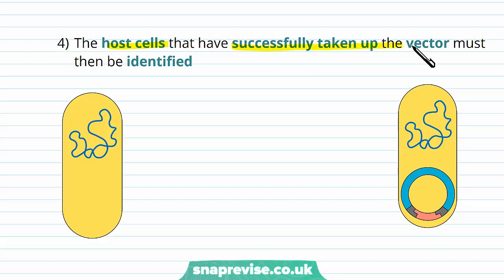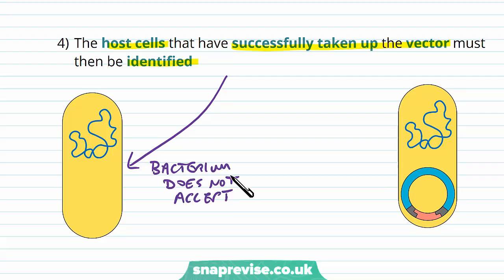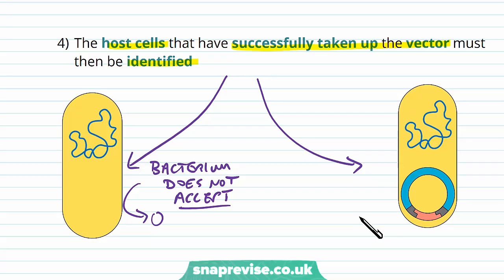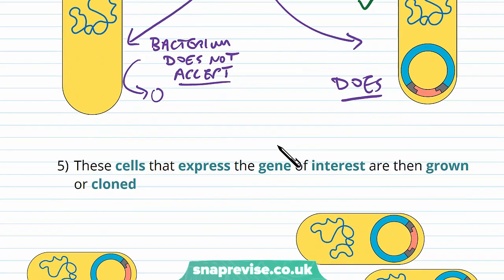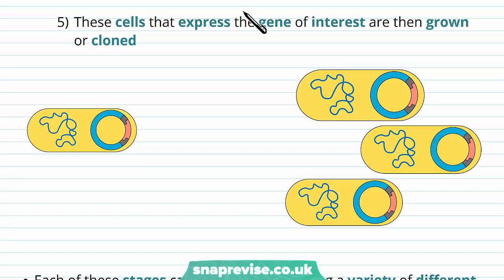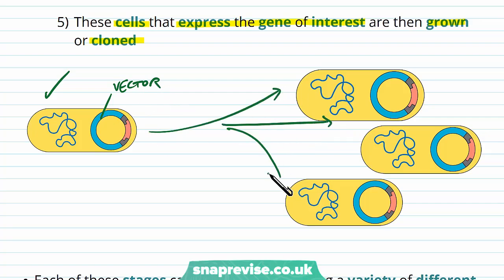The host cells which have successfully taken up the vector need to be identified. In theory all we need to do is put the vector into the bacterium, but this isn't always easy — sometimes the bacteria don't take up the vector due to chance, bad technique, or errors. So we need to identify those that have taken up the vector against those that haven't. The cells that have taken up the vector express the gene of interest, and we then grow or clone them. We multiply the cells in a culture or using some cloning technique so that we have lots of copies of this genetically modified organism.